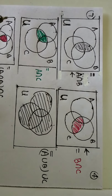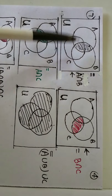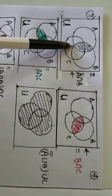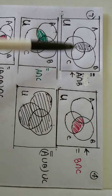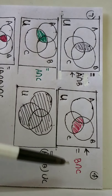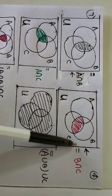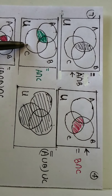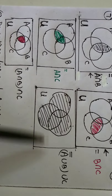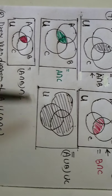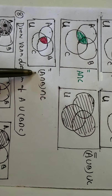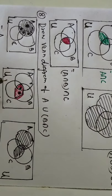Seventh number: just know what each portion represents. This portion is A intersection B. This is B intersection C. This is A intersection C. A union B union C is all shaded. And this central portion is called A intersection B intersection C.